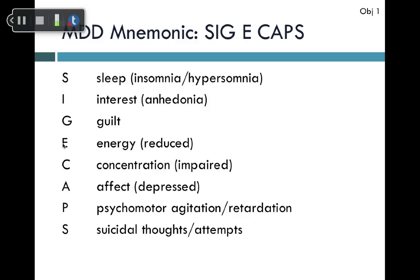S stands for sleep change. I stands for interest, which is reduced — also known as anhedonia. G stands for guilt — excessive or inappropriate guilt. E stands for energy, which is reduced. C stands for concentration, which is more difficult. A stands for affect — the objective measure of mood, which should be depressed. P stands for psychomotor agitation or retardation — either amping up or slowing down. S stands for suicidal thoughts or attempts.